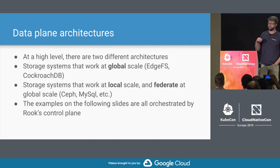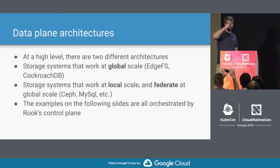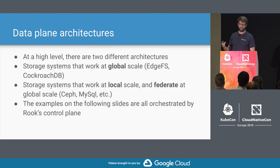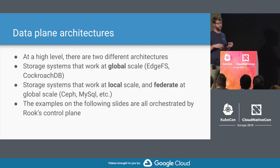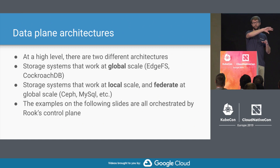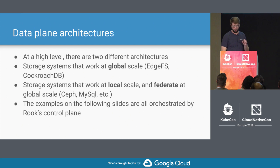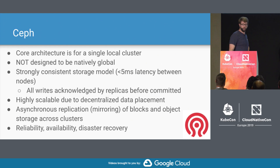In our data planes, at a high level there are basically two different types of architectures. One is a storage system natively designed and architected to work at a global scale from the very beginning — EdgeFS and CockroachDB are examples of that. Then you have a storage system that works more at a local scale, optimized for a single cluster, and in order to do global scenarios it works more like a federation type of scenario, managing data locally and federating with other clusters to replicate and mirror data outwards.